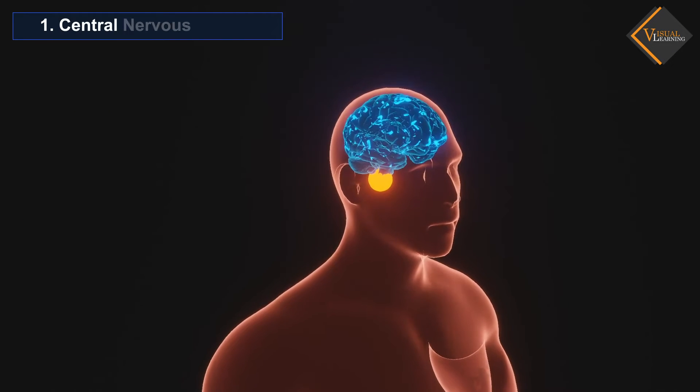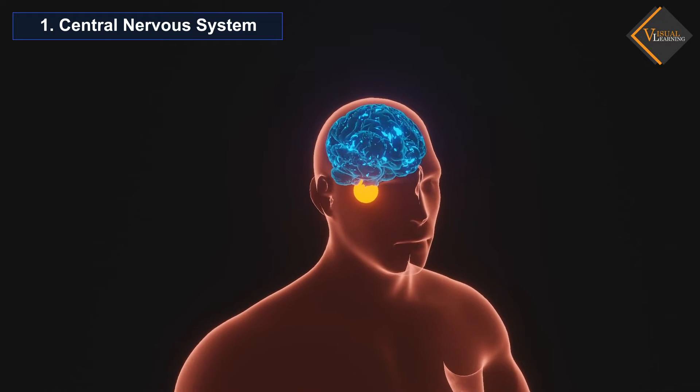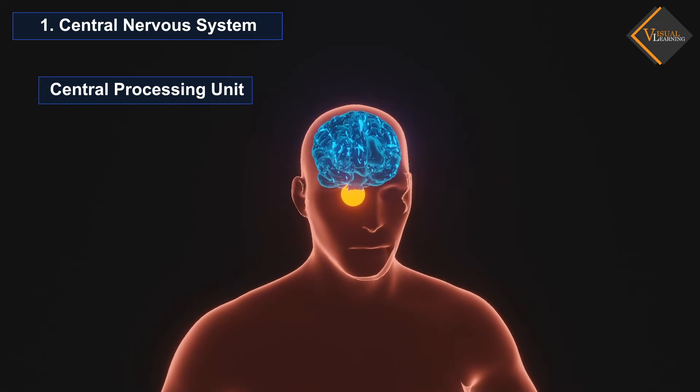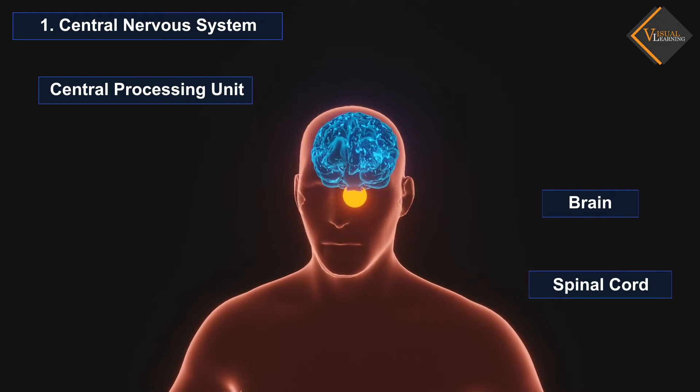The central nervous system is often called the central processing unit of the body. It consists of the brain and the spinal cord.